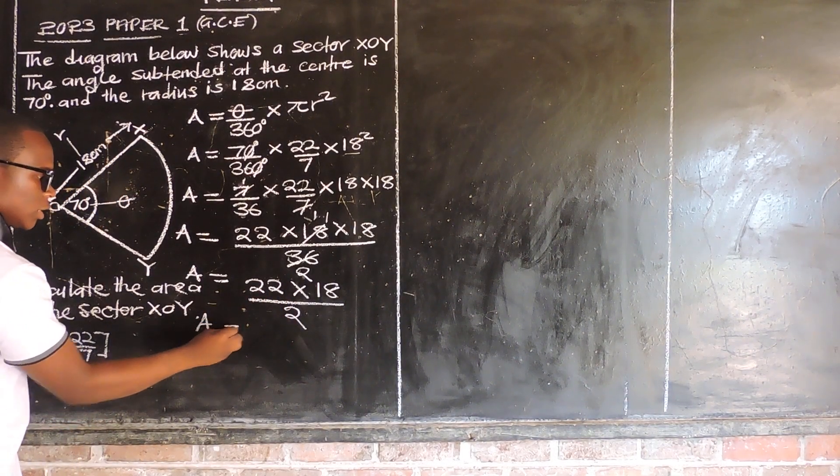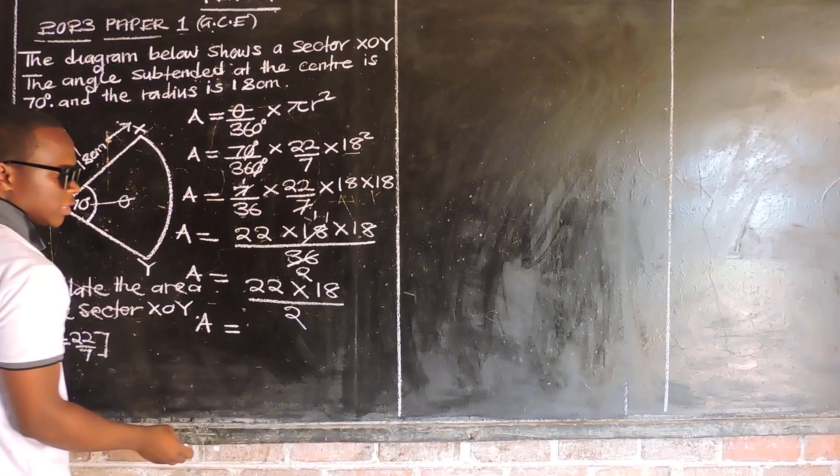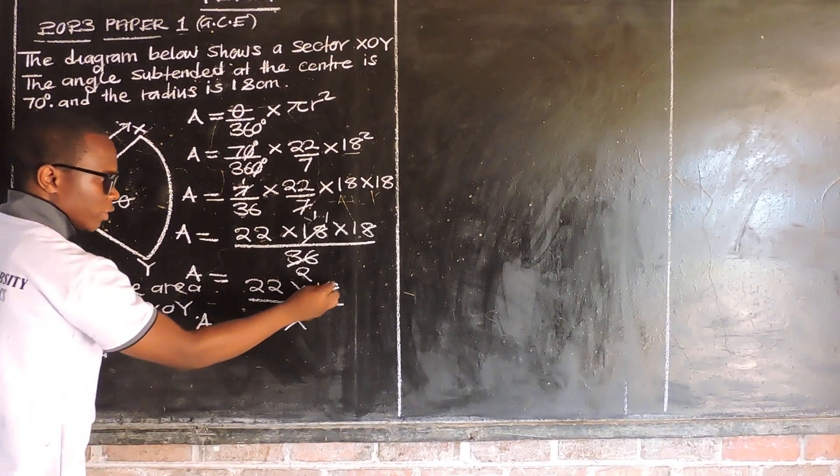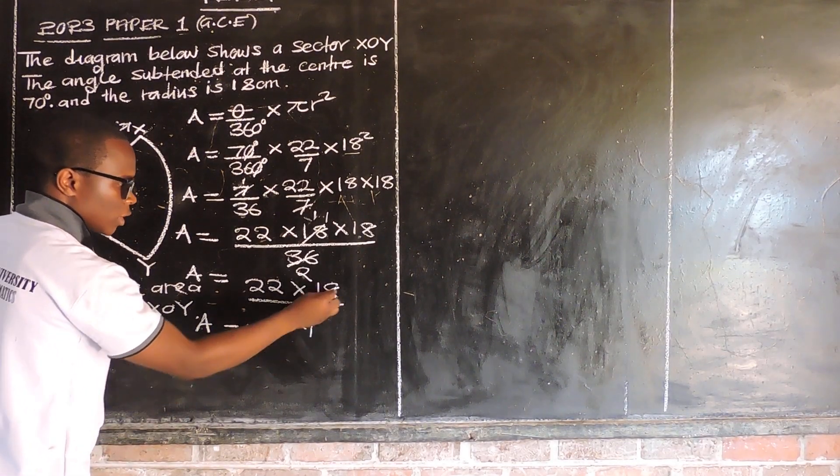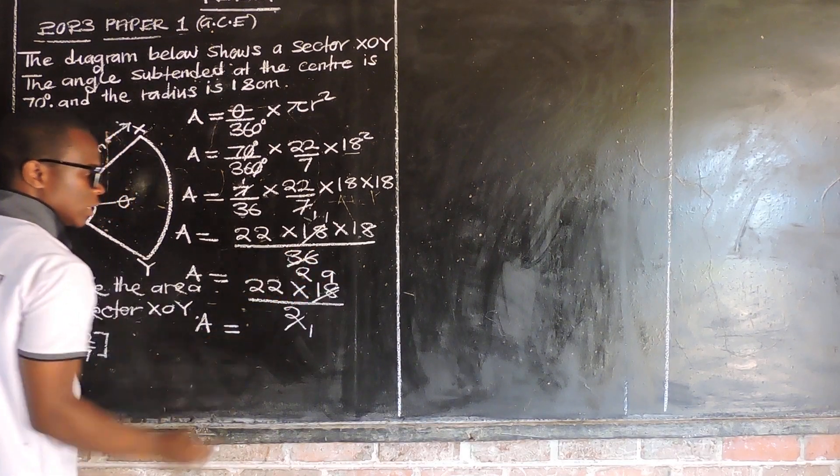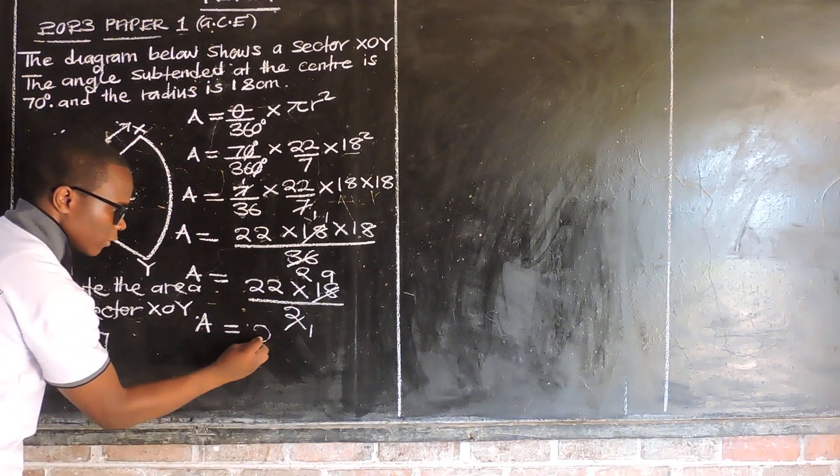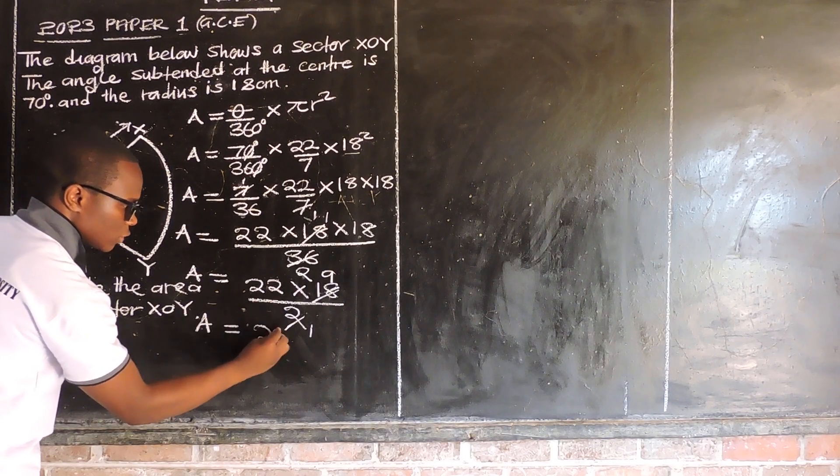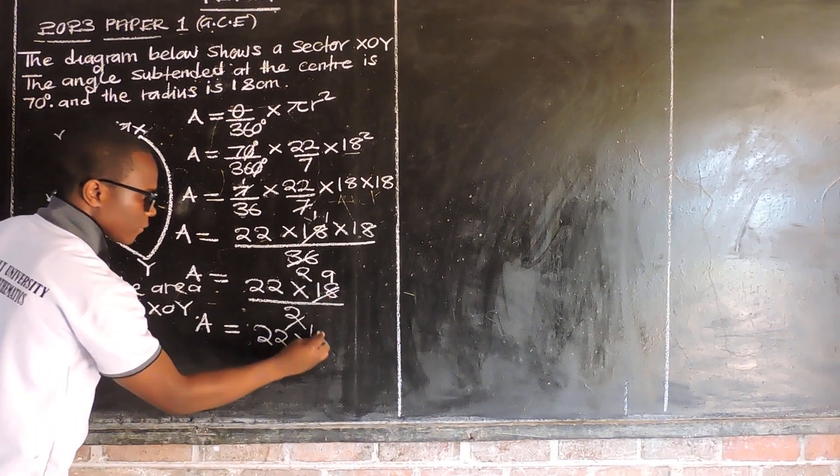Then you say area is equal to... Now we go and say 2 can go into 18. 2 into 2 is 1, 2 into 18 is 9. So what are we remaining with? We have 22 multiplied by 9.